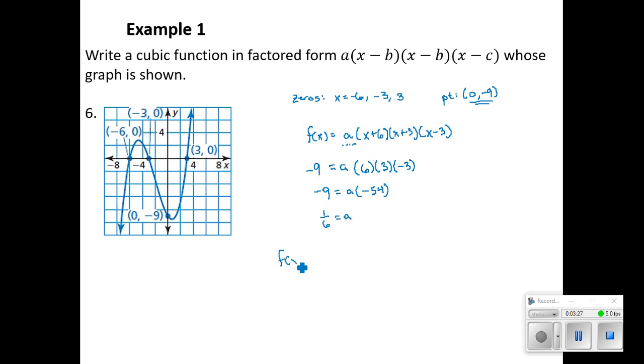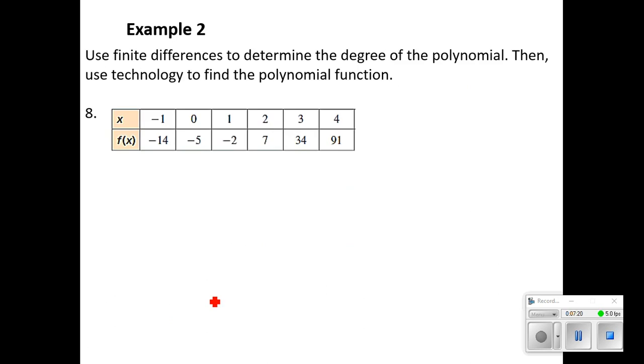So our function is 1/6 times (x + 6), times (x + 3), times (x - 3). Once we find a, we can plug that back into the factored form along with the zeros that we had.